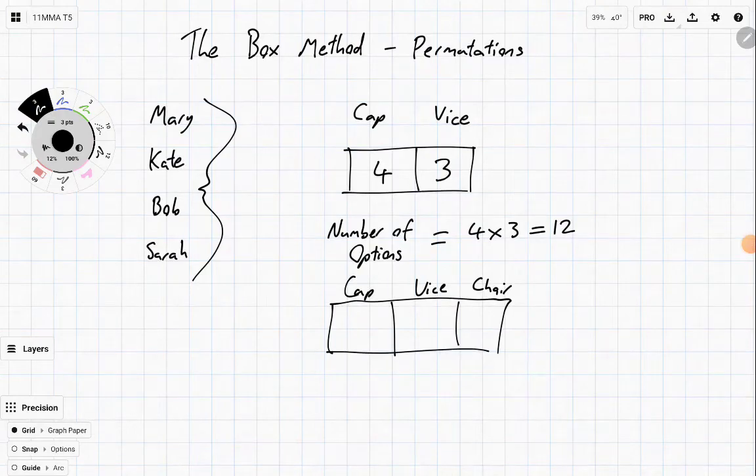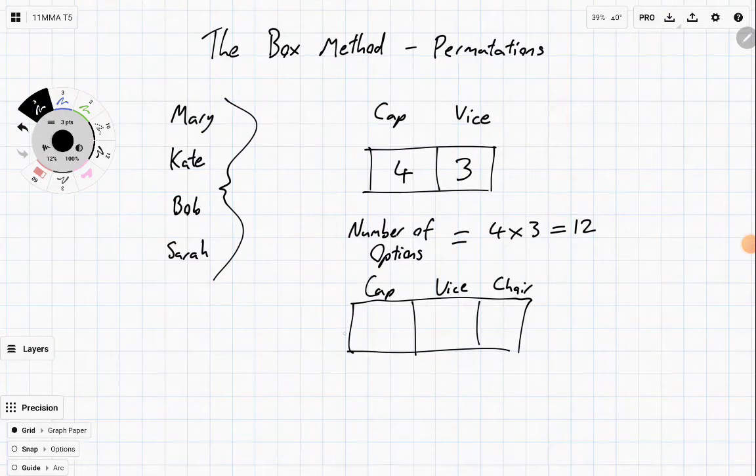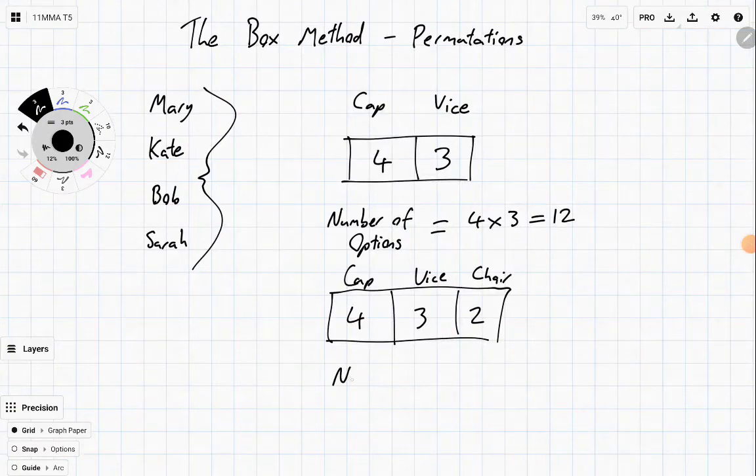And notice that no one can hold multiple seats, right? You can't be the captain and the chair or the vice and the captain. Well, then we've got four options for the first one, three options for the second one, two options for the last one, and the other person misses out.